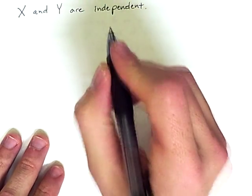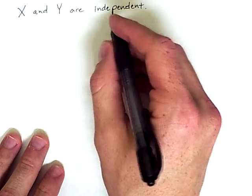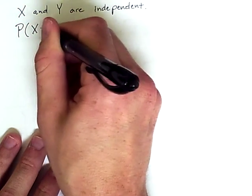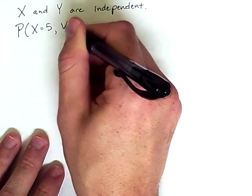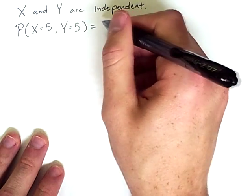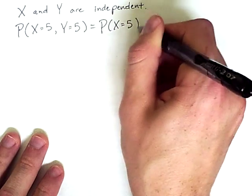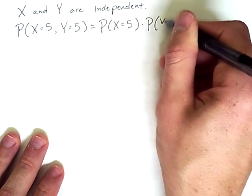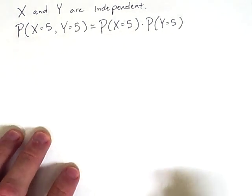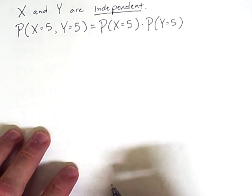X and Y are independent. Now, because and only because they are independent, it is the case that the probability of both of these outcomes occurring is equal to the probability of the first outcome multiplied by the probability of the second outcome. And once again, this is because of independence. This would not be true otherwise.